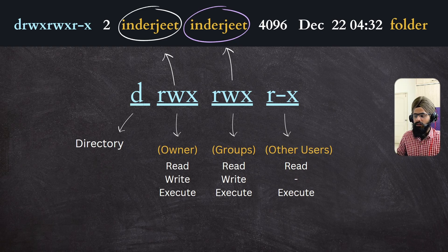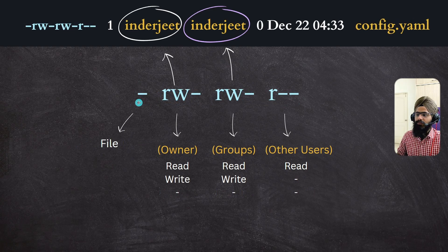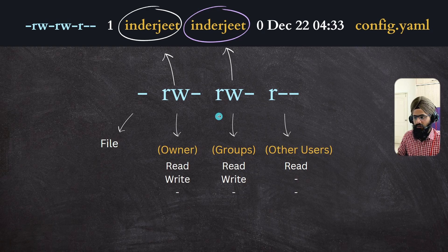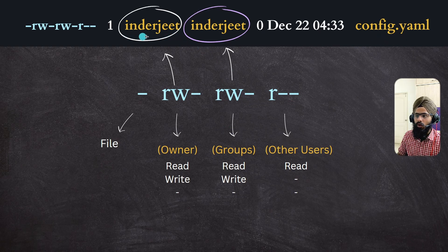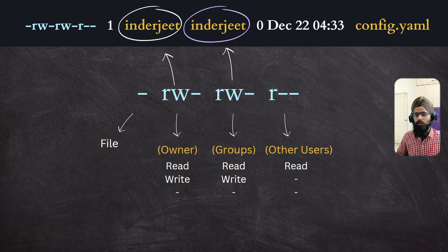In this example, the owner and group have read, write, and execute permissions, while others can only read and execute the file. For a file example, if it shows a dash in the permission field, it means there is no permission — it is zero. The owner's name and group name are shown in the output. As a default, when you create a username, the group name shows up with the same name.